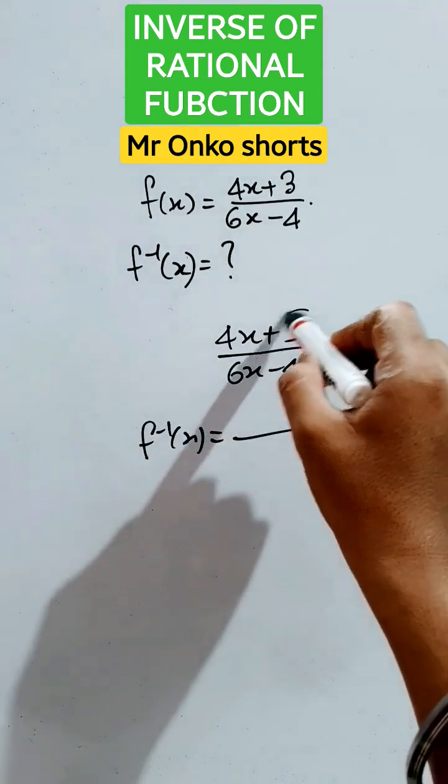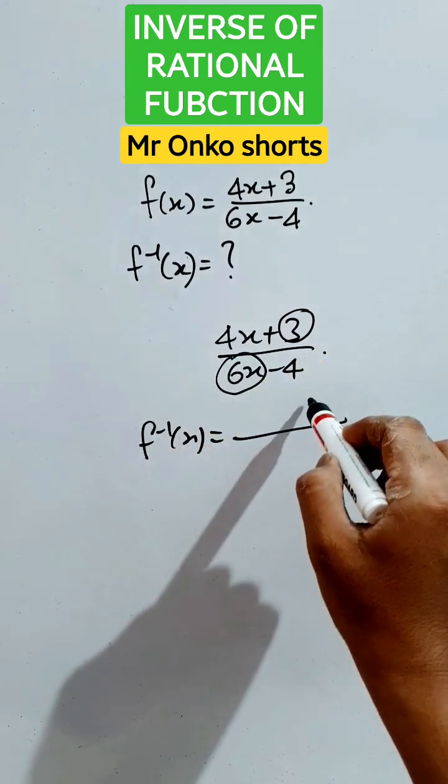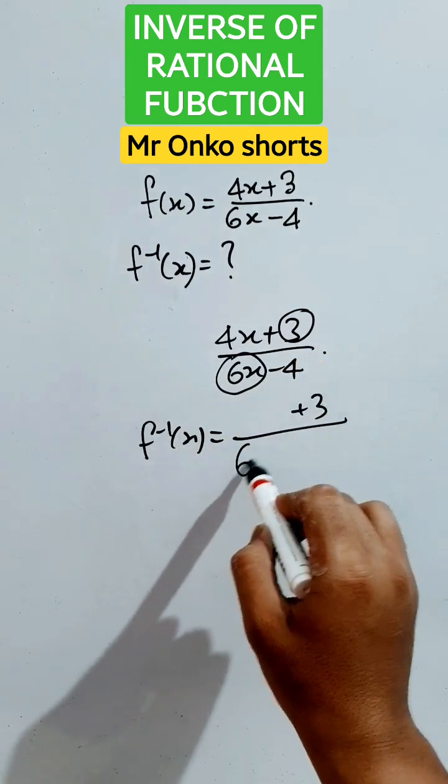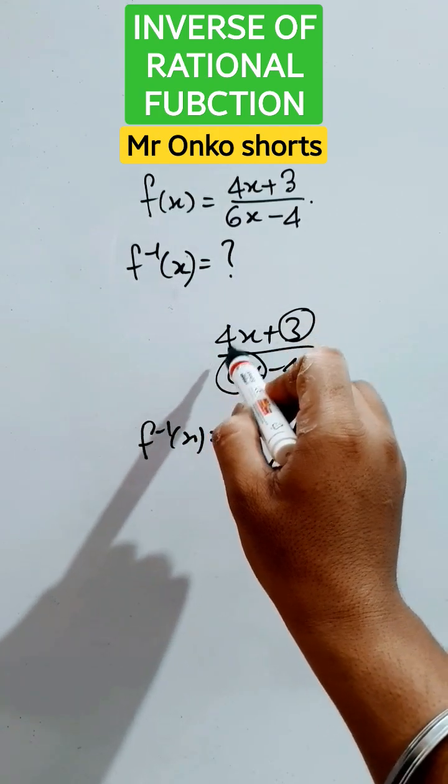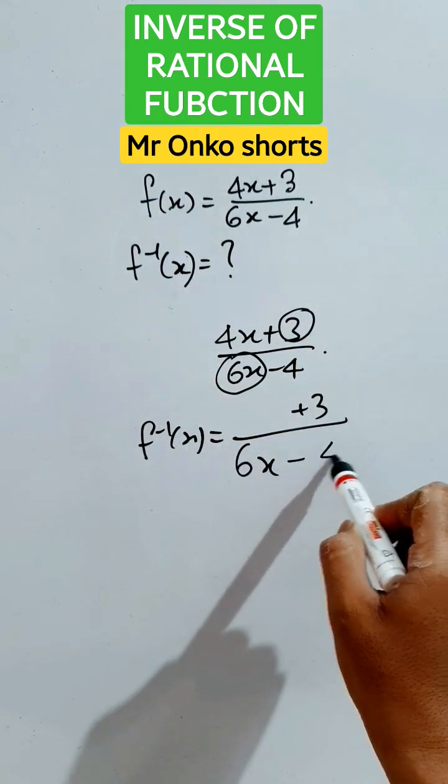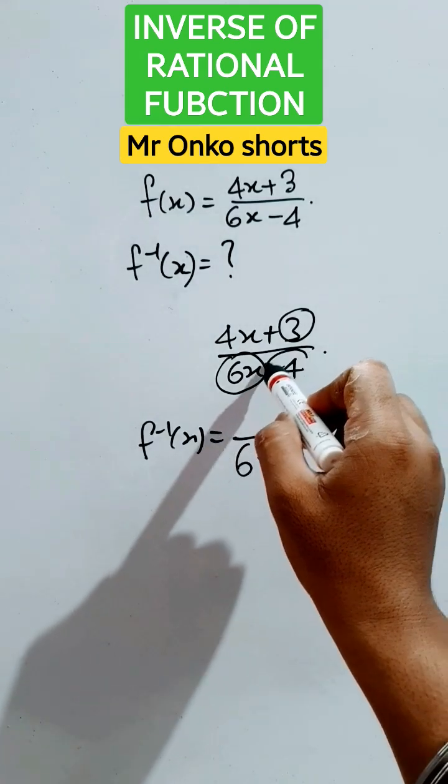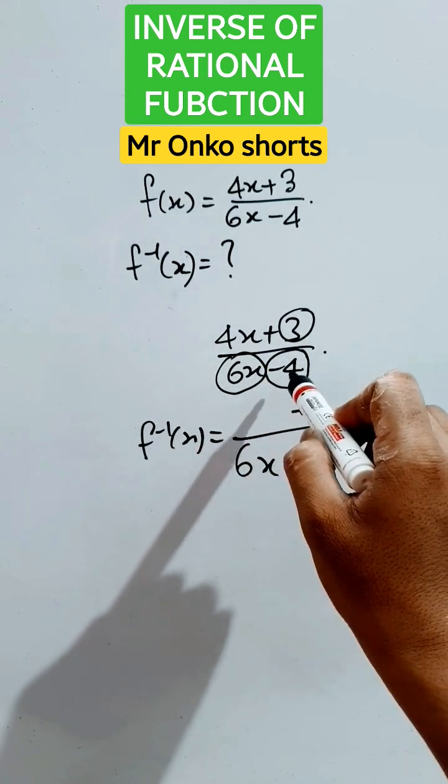So we will keep these two terms fixed, that is plus 3 and 6x. Now multiply the coefficient of x here with minus 1 and write it here, that is minus 4. And multiply this constant term with its sign, that is minus 4 with minus 1, that is plus 4.